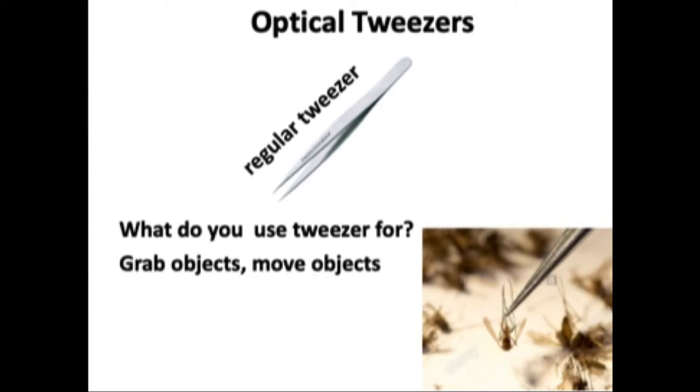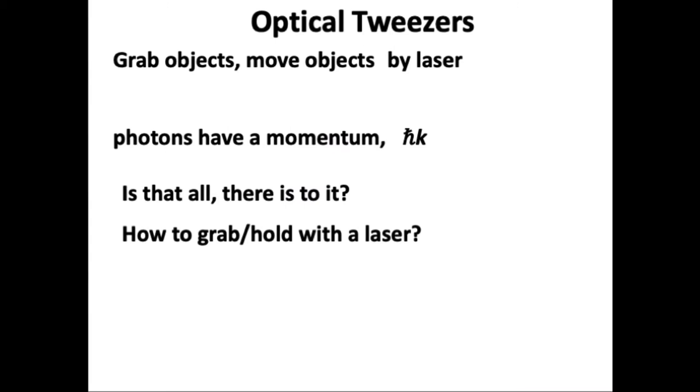We use regular tweezers to grab objects, maybe a mosquito, and to move them. That is the function we will replicate with optical tweezers. We are able to move objects with a laser because the photon has momentum. It is h-bar times k, same as photon energy divided by the speed of light. So we can push objects. How can we grab anything with a laser? Momentum enough.